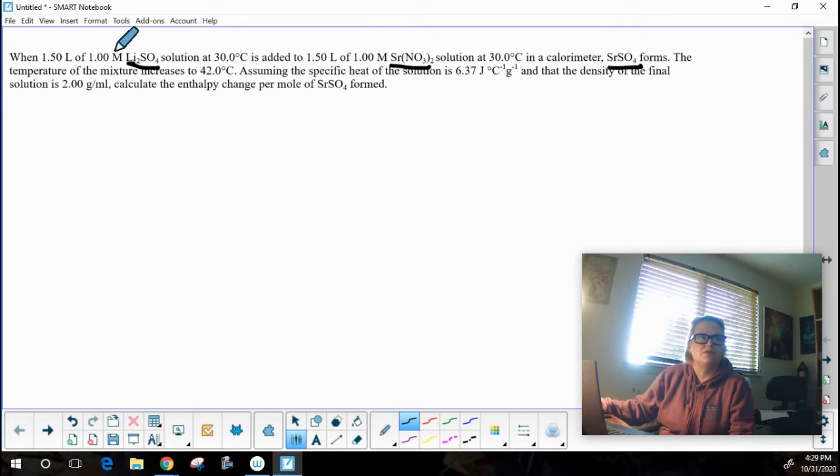The volume of both aqueous reactants is 1.50 liters. The molarity of both reactants is 1.00 moles per liter. Each one starts out at 30 degrees Celsius and when they combine together the temperature inside the calorimeter goes up to 42.